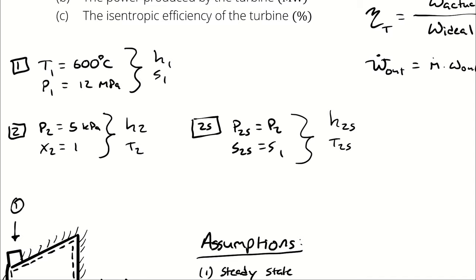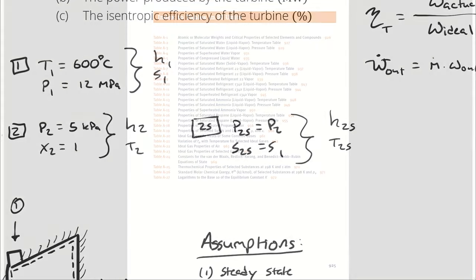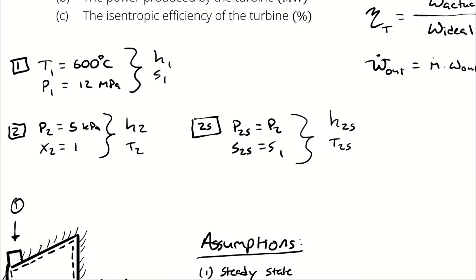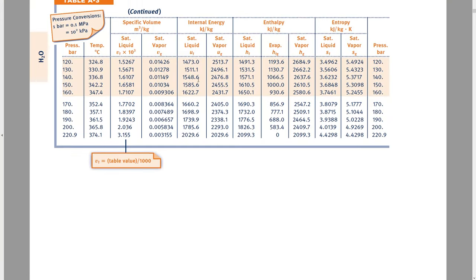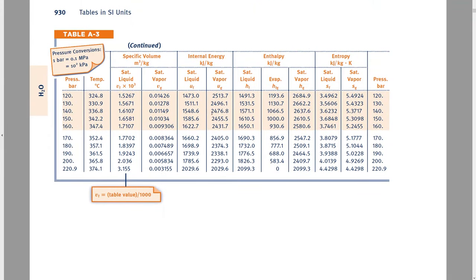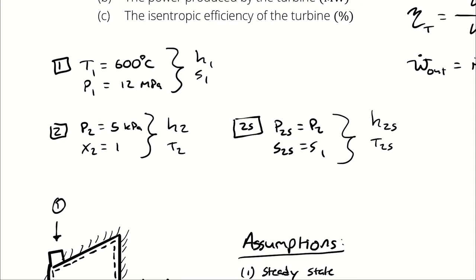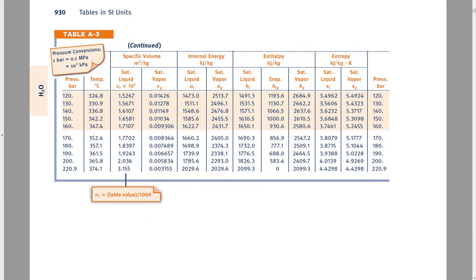So first up, I have state one, which has a temperature of 600 degrees Celsius and a pressure of 12 megapascals. If I jump into my property tables, I recognize that easiest way to fix state one is going to be to look up the saturation condition corresponding to either my temperature or pressure and compare the other to the saturation property. So I'm going to look up the saturation temperature at 12 megapascals, which means I'm going to go into my saturation tables for water by pressure. 12 megapascals is going to be 120 bar. At 120 bar, the saturation temperature is 324.8. Therefore, my temperature is greater than that, which means that I have a superheated vapor.